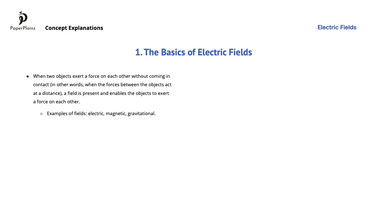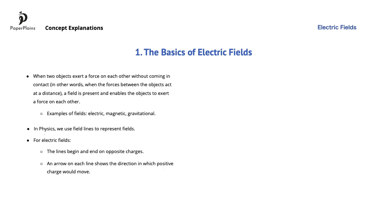To represent fields in physics, we use field lines. Here are some specific points about field lines for electric fields — some of these also apply to other fields. The field lines begin and end on opposite charges. An arrow on each line shows the direction in which positive charge would move. When the field is stronger, the lines are closer to each other. The lines meet the conducting surface at a 90-degree angle, and the lines never cross.